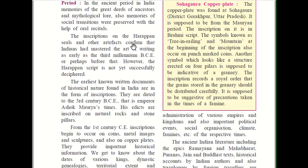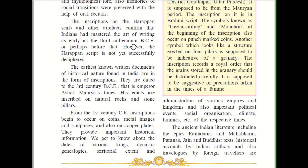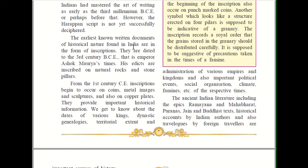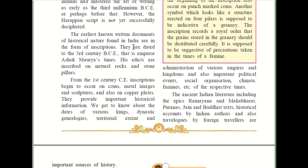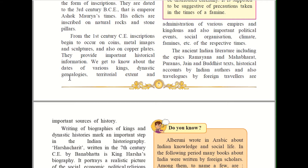The inscriptions on the Harappan seals and other artifacts confirm that Indians had mastered the art of writing as early as the 3rd millennium BCE, or perhaps before that. However, the Harappan script has not yet been successfully deciphered — meaning what was written on those artifacts has not been fully discovered or decoded. The earliest known written documents of historical nature found in India are in the form of inscriptions dated to the 3rd century BCE, that is Emperor Ashoka Maurya's time. His edicts are inscribed on natural rocks and stone pillars.